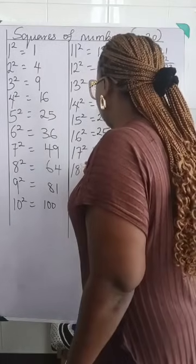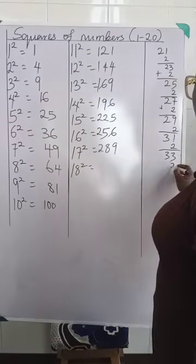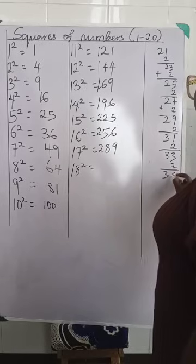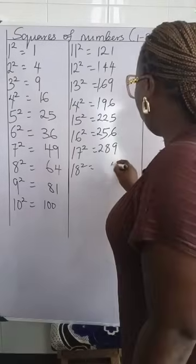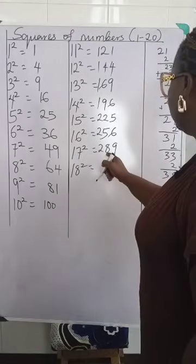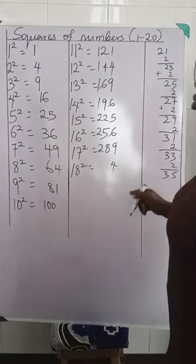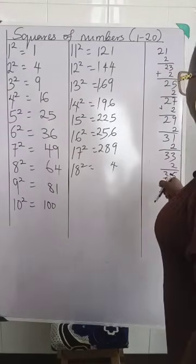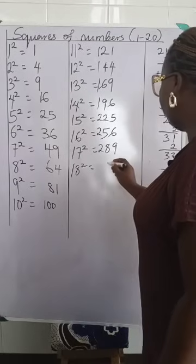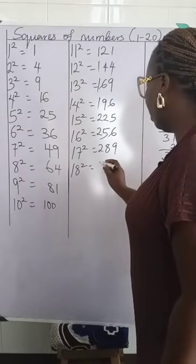Then your 18 squared will have plus 2 here, which is 35. 5 plus 9 is 4. 3 plus 8 is what? Remember we have 1 we are carrying over from here, which is everything that will give us 12. 2 plus 1 here is 3.